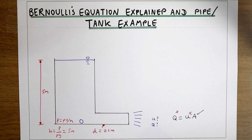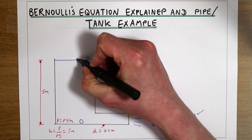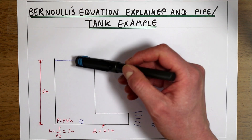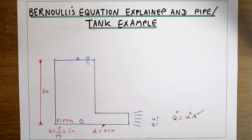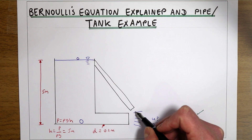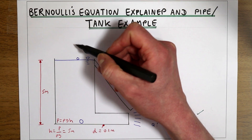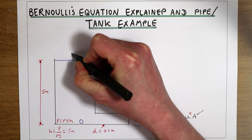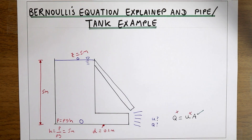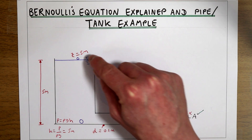By the principle of conservation of energy, energy levels should be the same everywhere in this system. A particle at the top of the tank should have the same energy as a particle at the bottom. The particle at the top has no water above it so it has no pressure, but it has five meters of elevation. The particle at the bottom has five meters of pressure. Both give the same energy to accelerate water down the pipe.